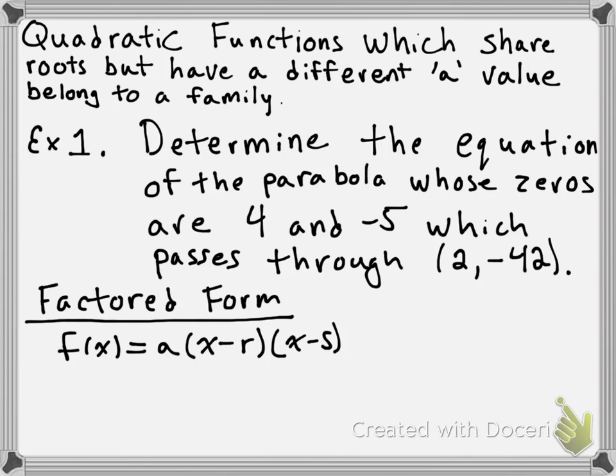Specifically, we know that they're going to go in for r right here and s right here. So we're going to be making the substitutions for those. When we make those substitutions, we end up getting f(x) = a(x - 4)(x + 5).